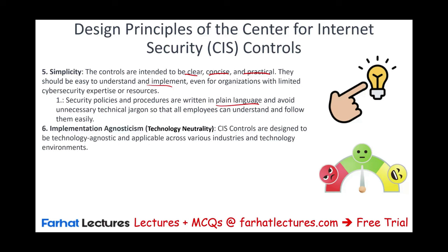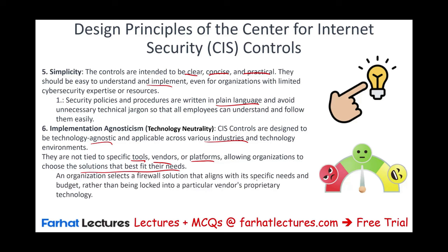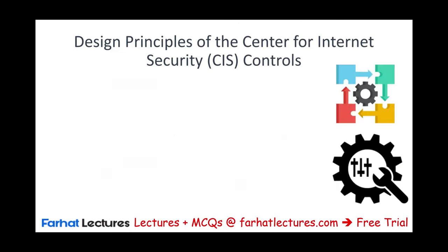There is something called implementation agnosticism, or technology neutrality. CIS controls are designed to be technology agnostic, meaning they are applicable across all industries and technology environments. They are not tied to any specific tool, vendor, or platform, allowing an organization to choose the solution that best fits their needs. For example, an organization selects a firewall solution aligned with its specific needs and budget rather than being locked into a particular vendor's proprietary technology.